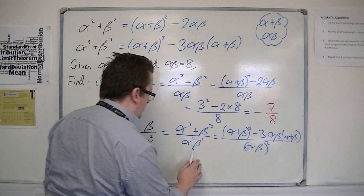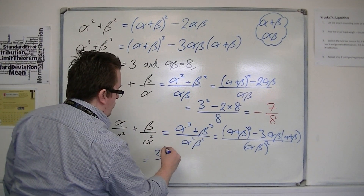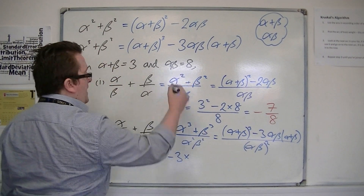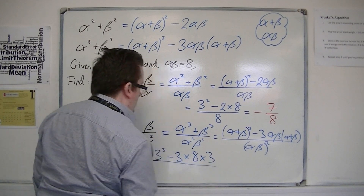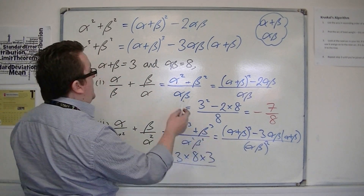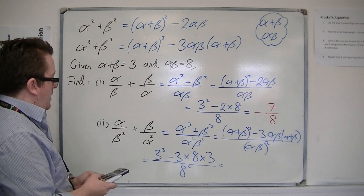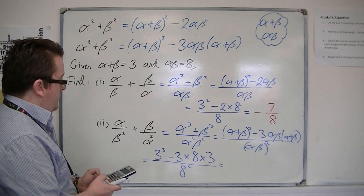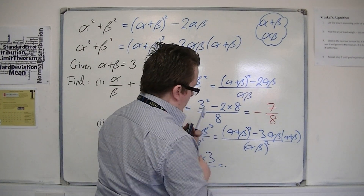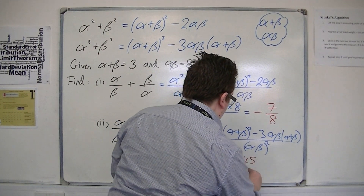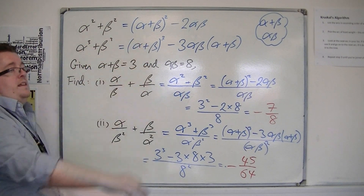So I've got alpha plus beta cubed, that's 3 cubed, take away 3 lots of alpha beta times alpha plus beta, and divide that by alpha beta squared. So we've got 3 cubed take away 3 times 8 times 3, divide that by 64, and I get minus 45 over 64. And that's how we can use these expressions.